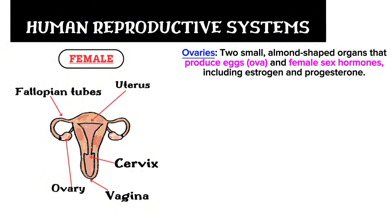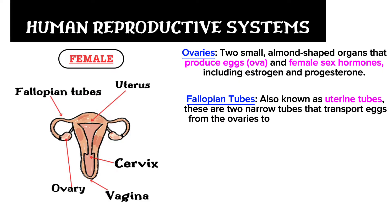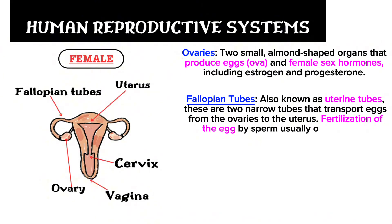Next we're talking about the fallopian tube, which is also known as oviduct or uterine tubes. These are two narrow tubes that transport eggs from the ovaries to the uterus. Fertilization of the egg by sperm usually occurs in the fallopian tubes.